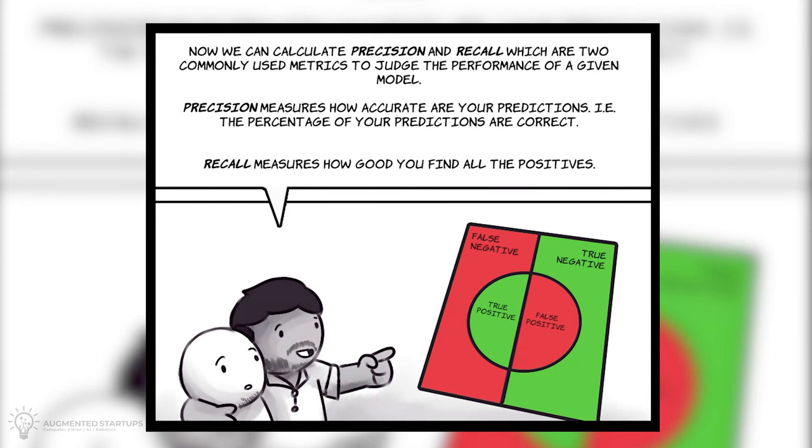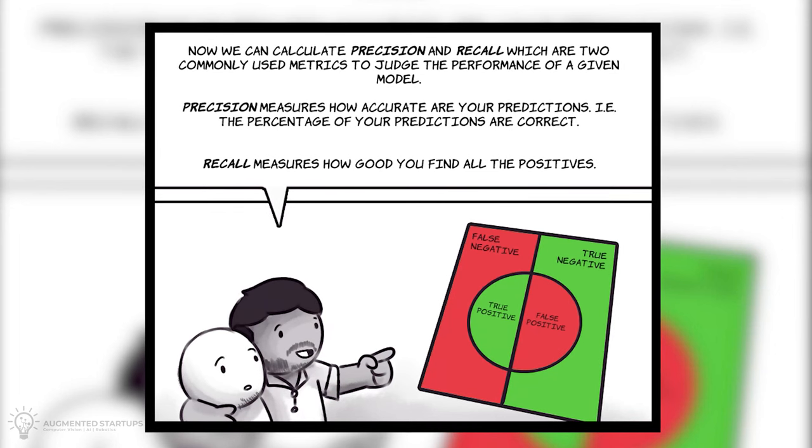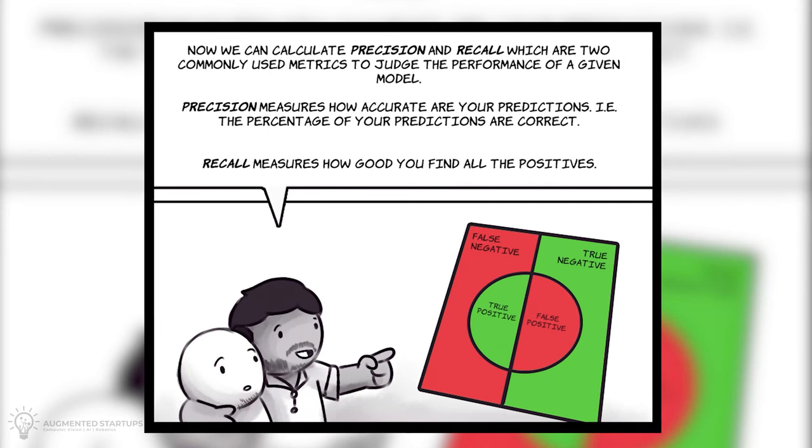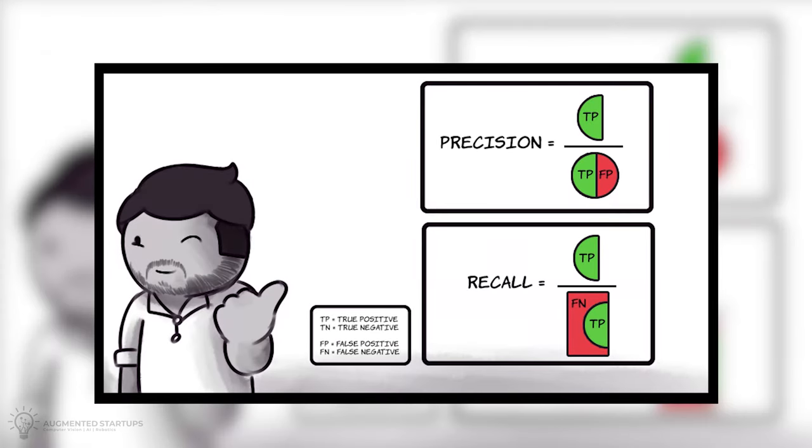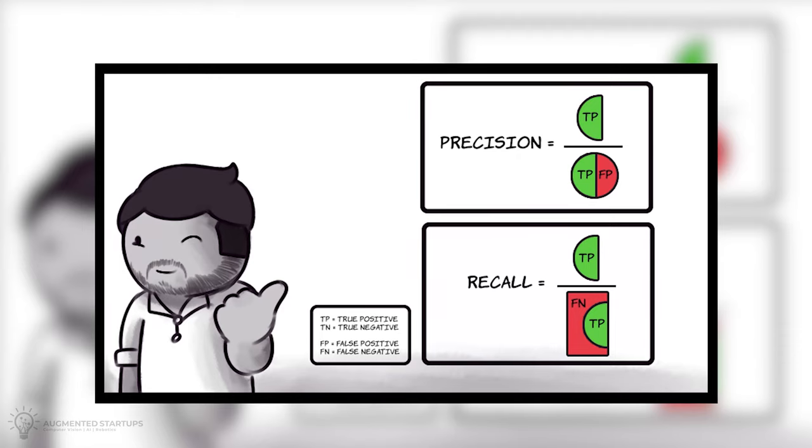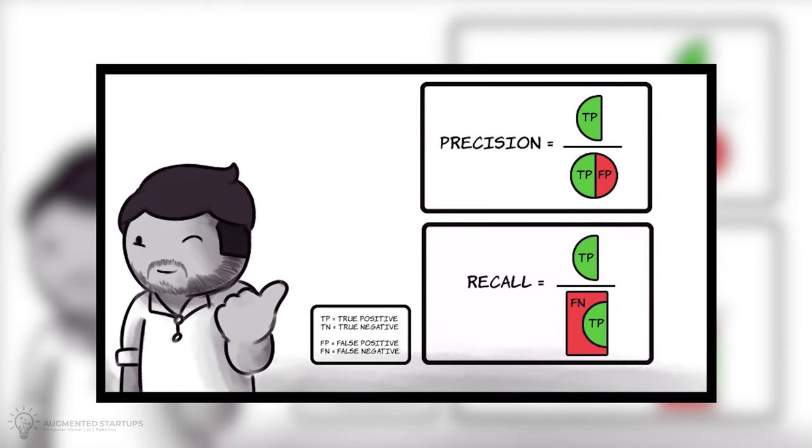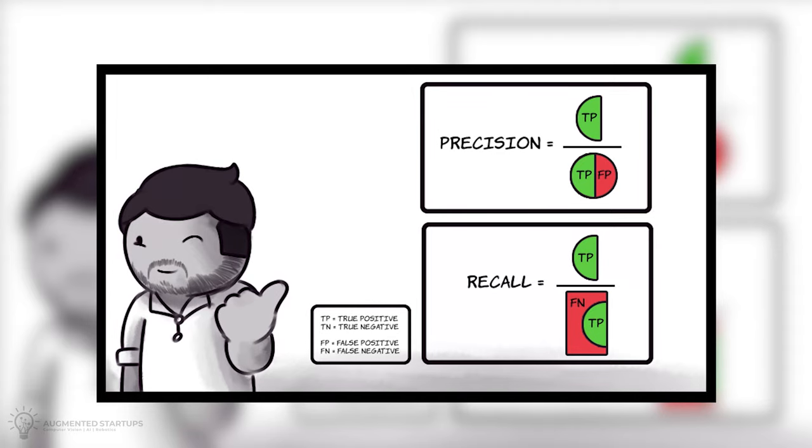Precision measures how accurate are your predictions, for example, the percentage of your predictions which are correct, and recall measures how good you find all of the positives. So, precision equals true positive over true positive plus false positive, whereas recall equals true positive over the combination of false negative and true positive.